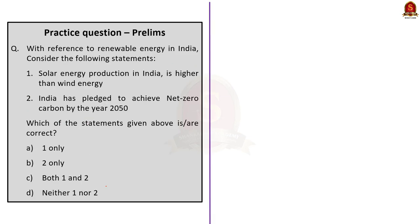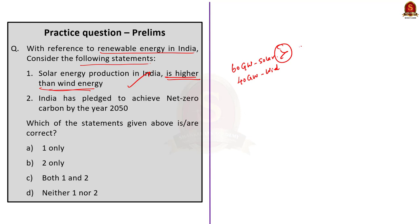Moving on to the next question: with reference to renewable energy in India, consider the following statements. Statement 1 says solar energy production in India is higher than wind energy — this statement is correct, as solar energy's contribution among renewable energy is the highest. Statement 2 says India has pledged to achieve net zero carbon emission target by the year 2050 — this statement is incorrect; the target has been set to achieve by the year 2070. So the correct answer is option A: 1 only.